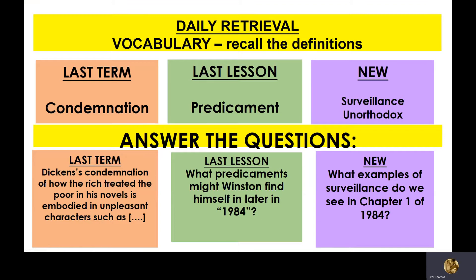Welcome to dystopia lesson four. Dystopia means 'bad place', and you're studying a novel that takes place in a dystopian society: 1984. What does condemnation mean? You could say George Orwell condemned totalitarian governments. Condemnation means strong criticism. Dickens's condemnation of how the rich treated the poor in his novels is embodied in unpleasant characters.